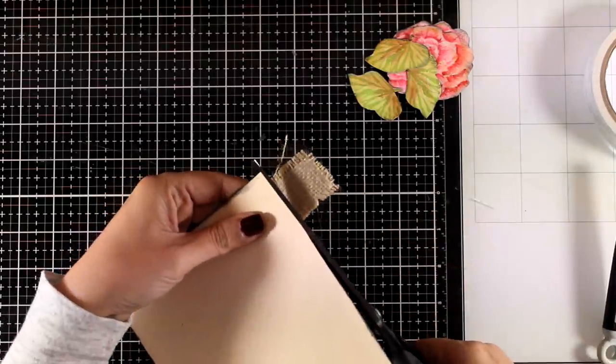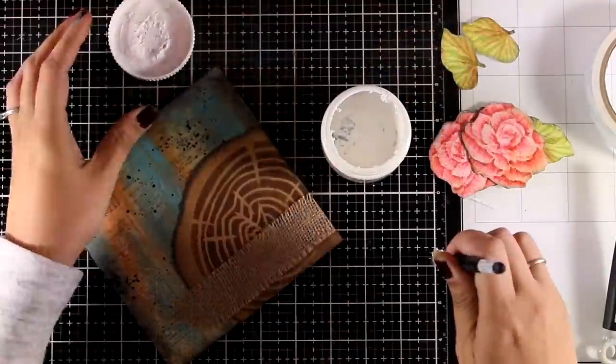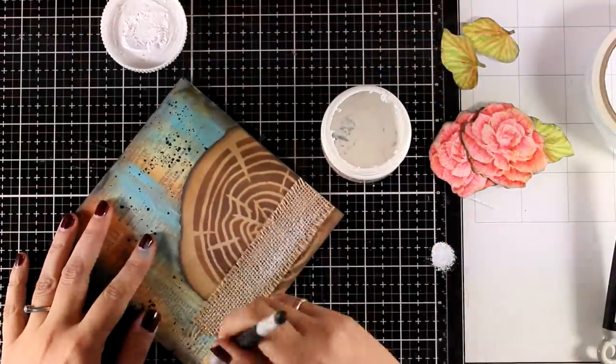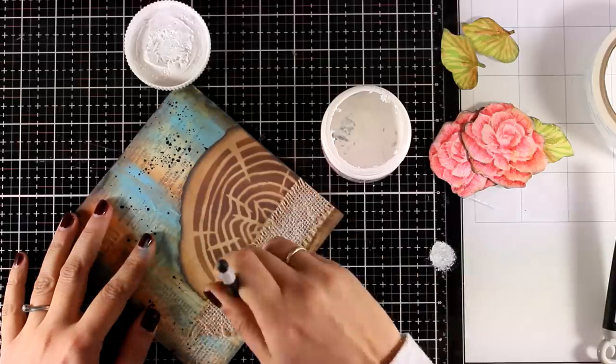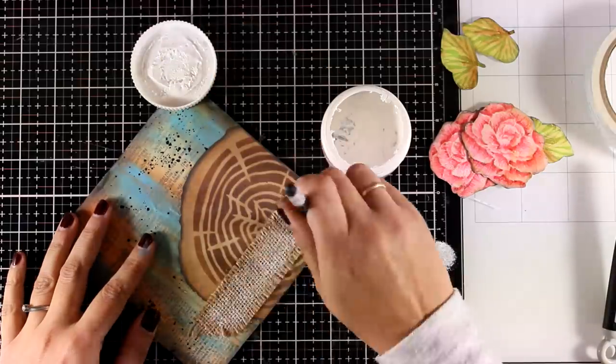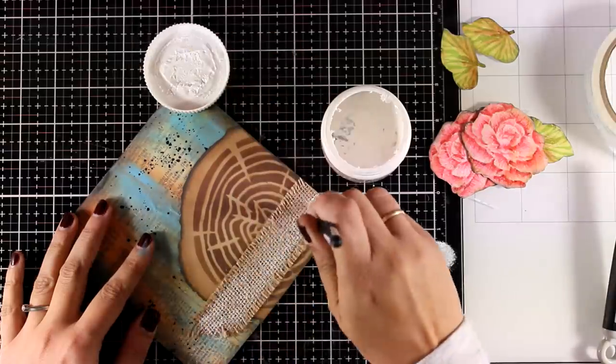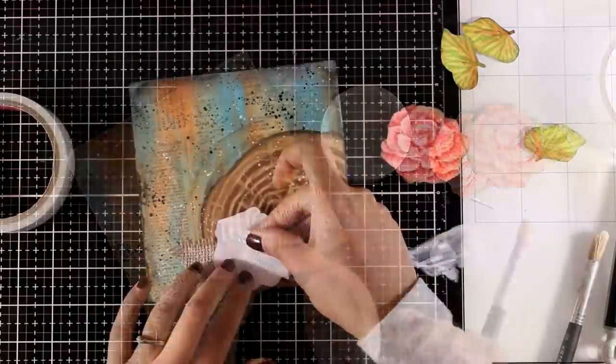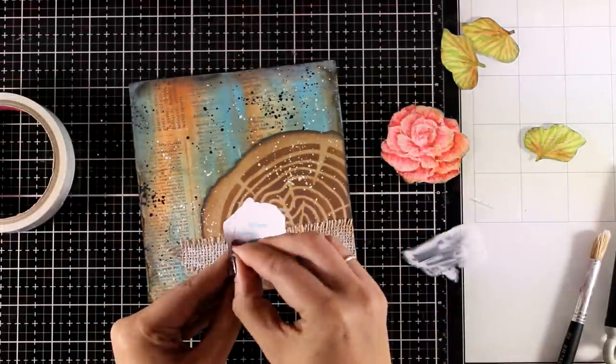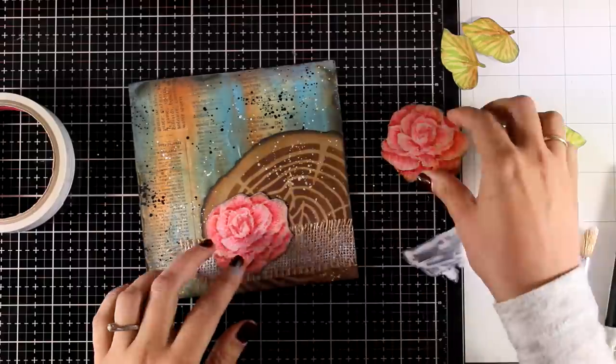When it comes to art journaling it is all about the different layers, the visual texture as well as the different materials that you can put together. And all these different elements take your page into the next level. Now I am adding some highlights on top of my burlap and that is with white gesso. I am just dry brushing some on top of it. And then I am going to stick the flowers in the leaves to create my little composition there.